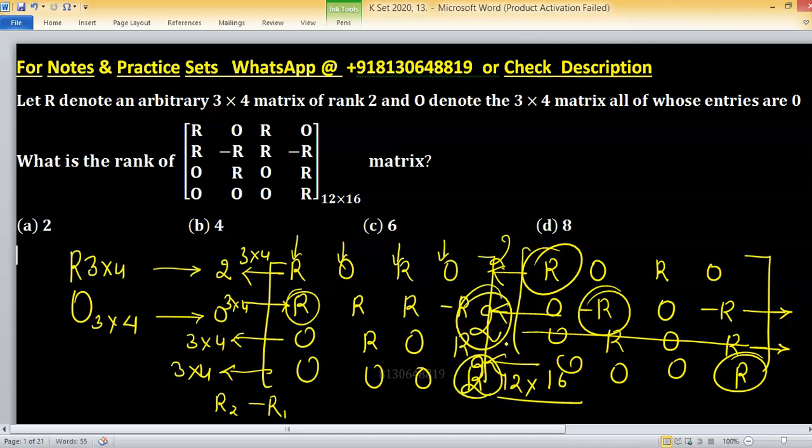So there are 2 non-zero rows in each R. So there will be 6 non-zero rows in this complete matrix. Option C will be the right one. Good.